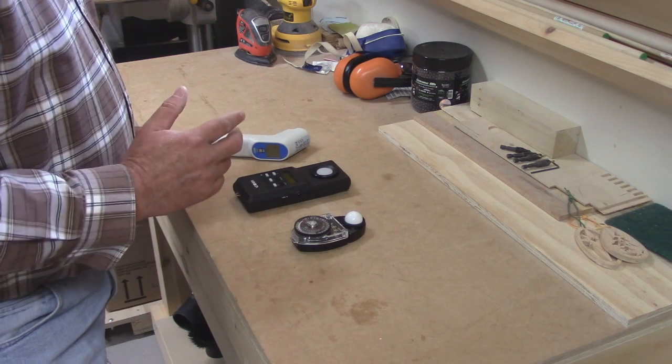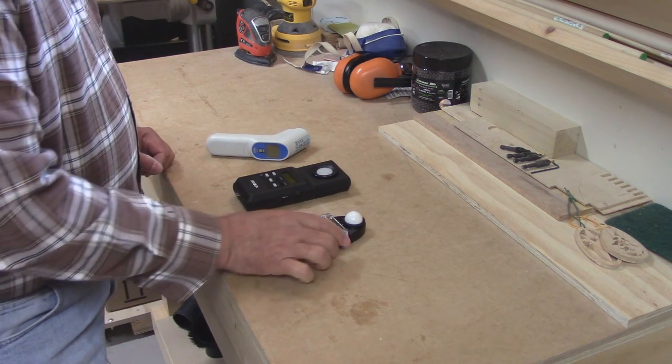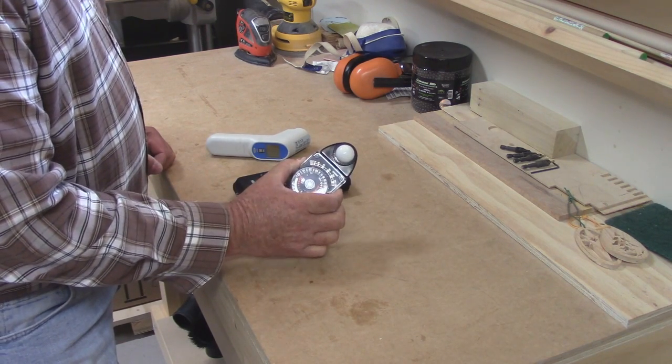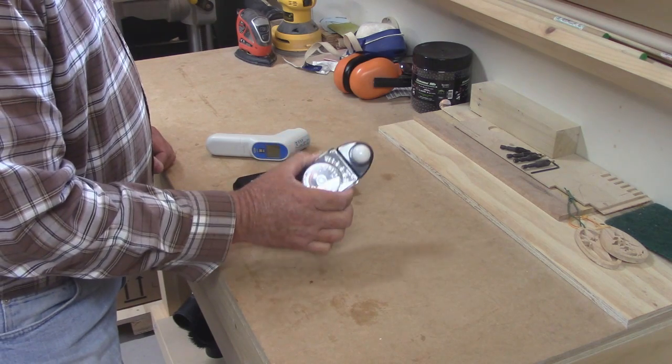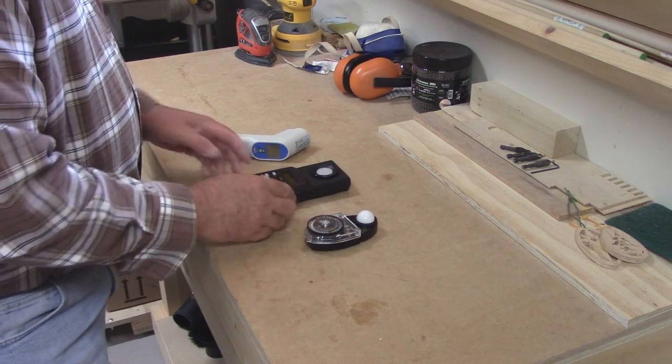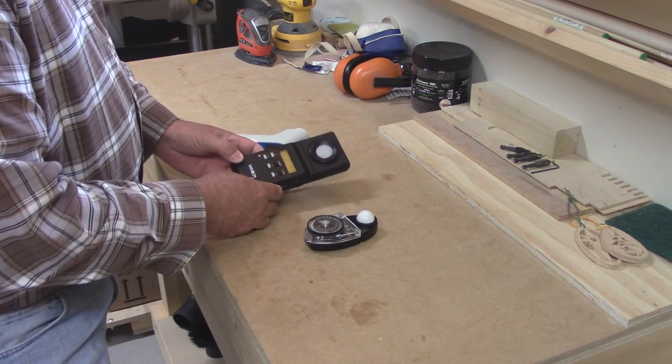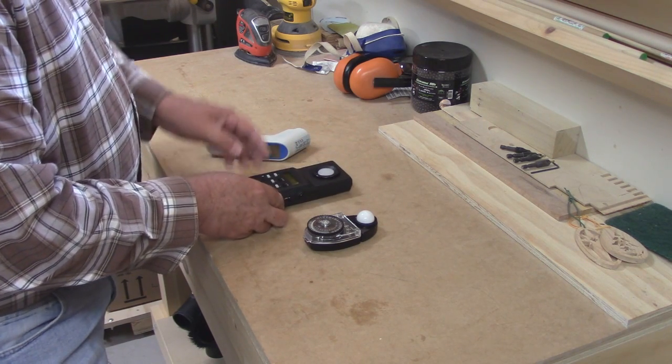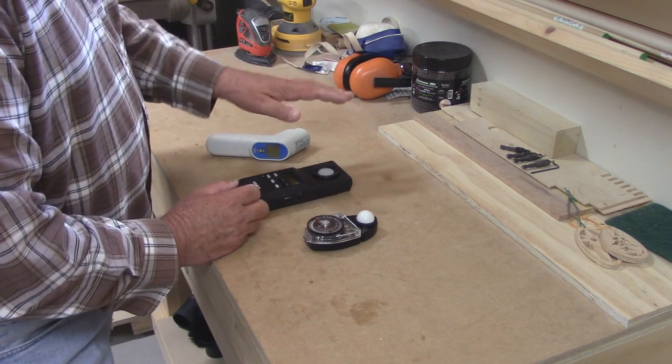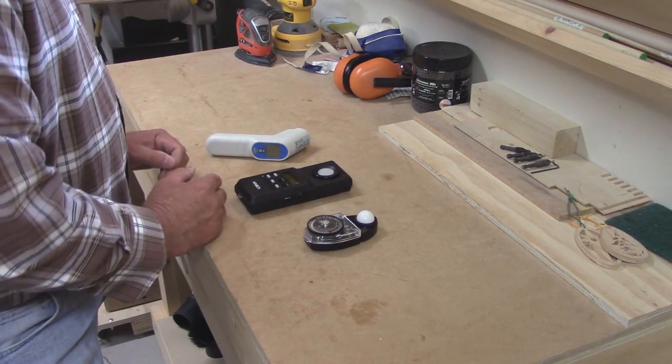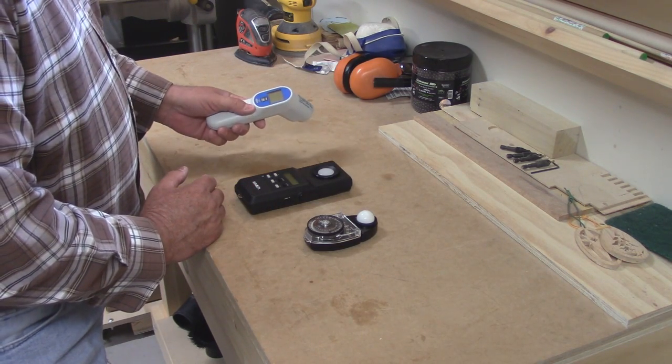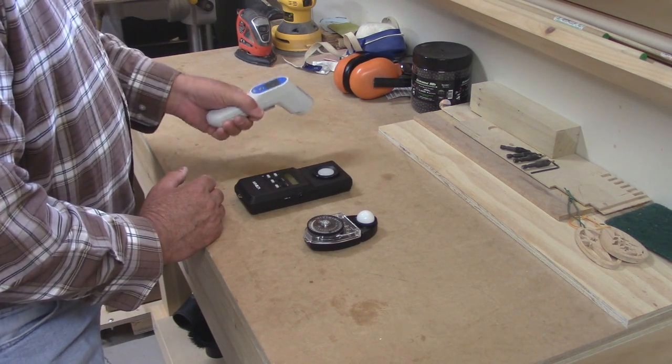For these tests, I'm going to be using different pieces of equipment. This is a light meter. It's going to give me the intensity in foot candles. This is a color temperature meter. It will tell me the degrees Kelvin and it can either be in the yellow, the white or the blue spectrum of light. And this is an infrared thermometer used to monitor heat dissipation.